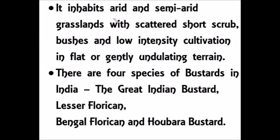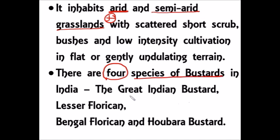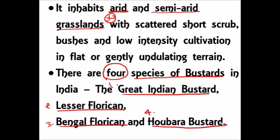An important prelims point is that the Great Indian Bustard inhabits arid and semi-arid grasslands. Another important point is that the Great Indian Bustard is one of four bustard species found in India. The four species are: first, the Great Indian Bustard; second, the Lesser Florican; third, the Bengal Florican; and fourth, the Houbara Bustard. These are very important from the prelims point of view — don't forget these four types of bustards.